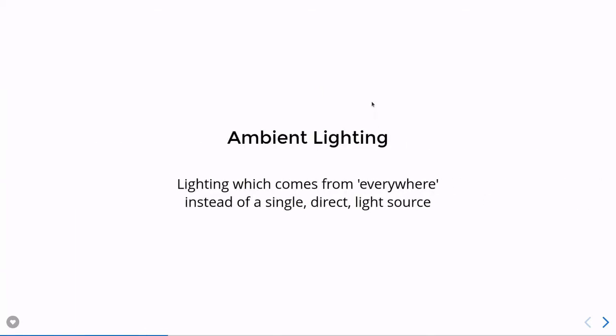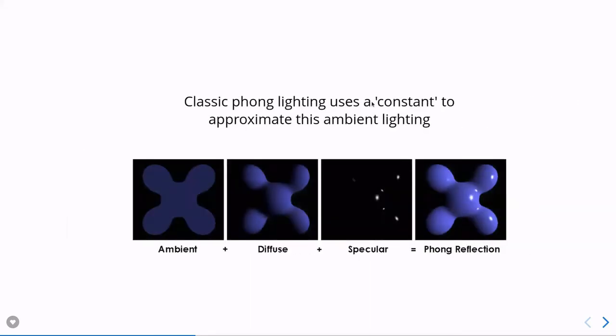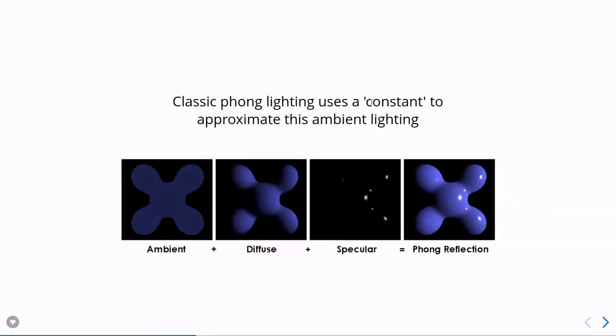So ambient lighting. What is ambient lighting as opposed to direct or indirect or whatever? Well, in our abstract simplified to the point of not being very accurate model, we refer to ambient lighting as the lighting which comes from everywhere rather than from a specific source or set of sources.